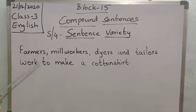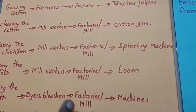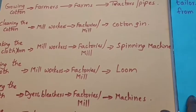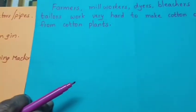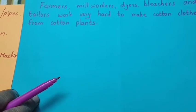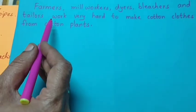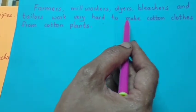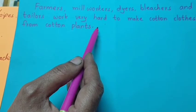So first we are going to start our paragraph by using this topic sentence. Now with the help of these details we are going to write a paragraph. If we include an introduction to the paragraph which talks about people, places and tools, it makes our paragraph better. The topic sentence is: Farmers, mill workers, dyers, bleachers and tailors work very hard to make cotton clothes from cotton plants.